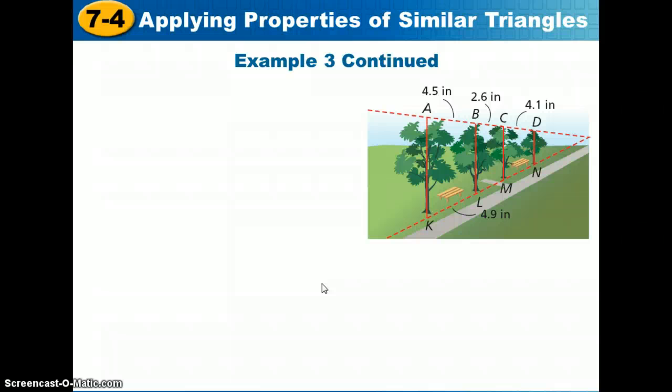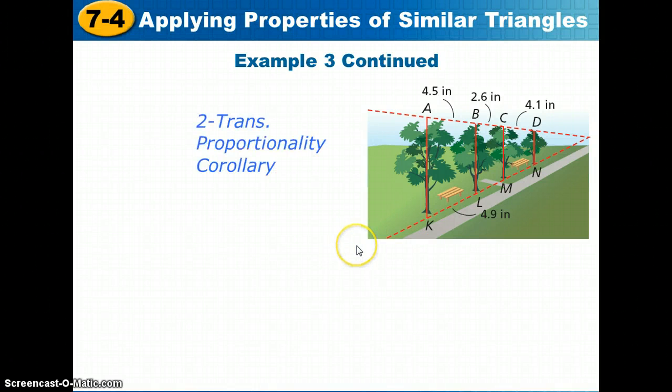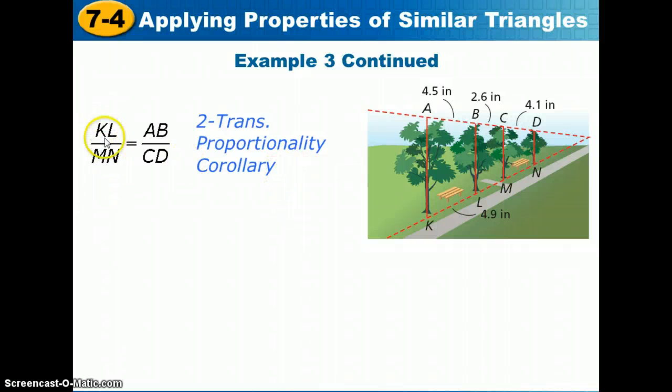Alright, the other part of example 3 is to find MN. To find MN, we're going to use this proportion, KL over MN equals AB over CD. And so, we set this proportion up a little bit differently. We're comparing AB to CD, but again, we're going to compare KL to MN, and so the means are just switched out from where they were in the previous example.